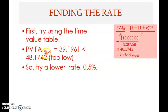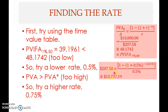You cannot use one percent because it gives a value that is too low, meaning one percent is too high. So you should try a lower rate. Going halfway, dividing by two gives 0.5 percent. Let's try 0.5 percent: the payment of 207.58 multiplied by (1 minus (1 plus 0.5%) raised to the power of negative 60), divided by 0.5 percent.